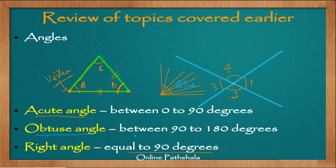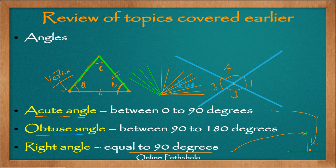Then we come to an obtuse angle. An obtuse angle is between 90 and 180 degrees — that is when we start looking at the other part of the angle, extending it beyond 90 degrees. To visualize this: we make a straight line and draw a perpendicular. Any angle from 0 to 90 degrees is an acute angle, the 90-degree angle is a right angle, and any angle in the region from 90 to 180 degrees is an obtuse angle.